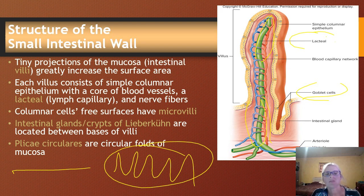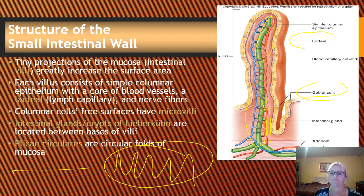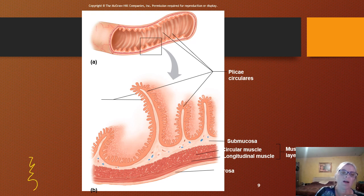We have intestinal glands, also called crypts of Lieberkühn, located between the bases of the villi. We also have plicae circulares, which are circular folds of mucosa — intestinal folds. So between the plicae circulares, the villi, and the microvilli, all of these really increase the surface area available for absorption.